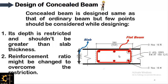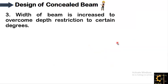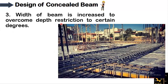The flat beam lies within the slab — that is why it is called a hidden beam or concealed beam. This is the typical cross section of the beam: stirrups are provided and extra reinforcement is provided within the beam to give it the structural function of a beam. The height is restricted, the reinforcement ratio is increased so it can perform the function of a beam, and the width of the beam is increased to overcome the depth restriction.